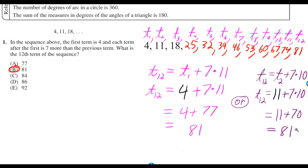4, 11, 18, dot, dot, dot. In the sequence above, the first term is 4, and each term after the first is 7 more than the previous term. What is the 12th term of the sequence?